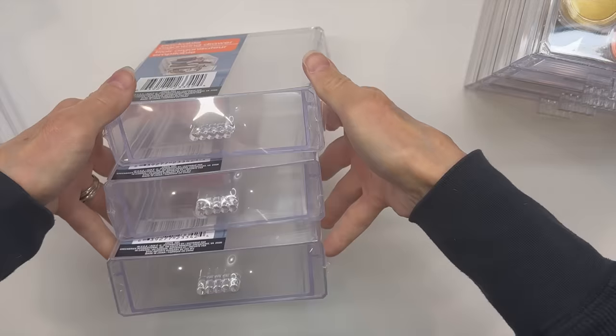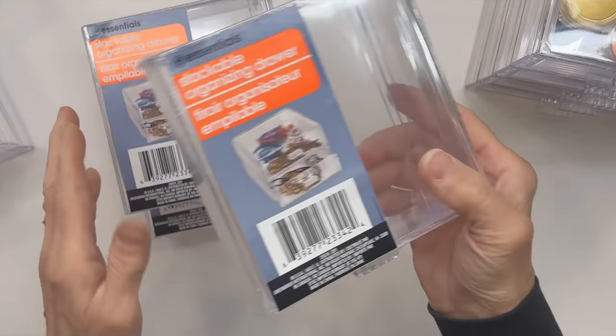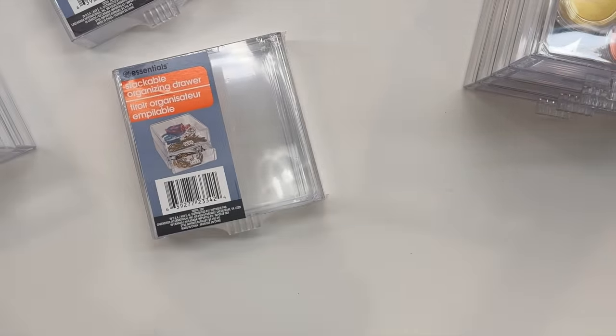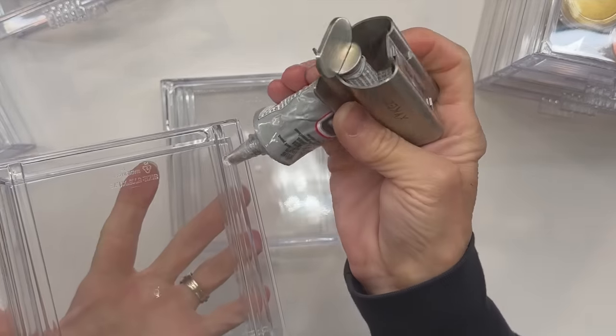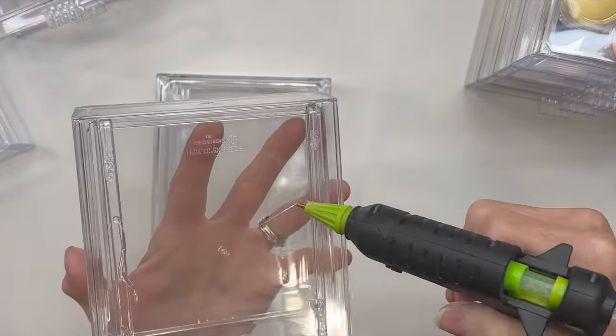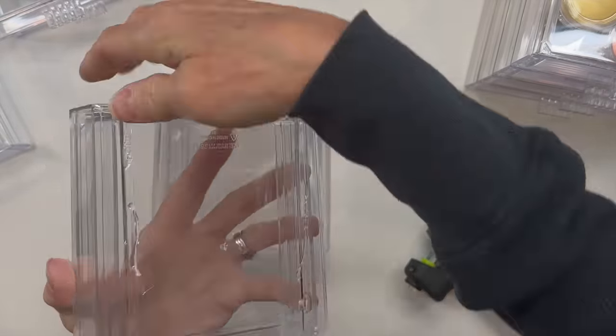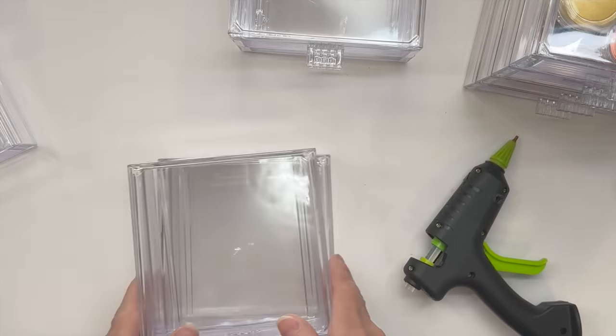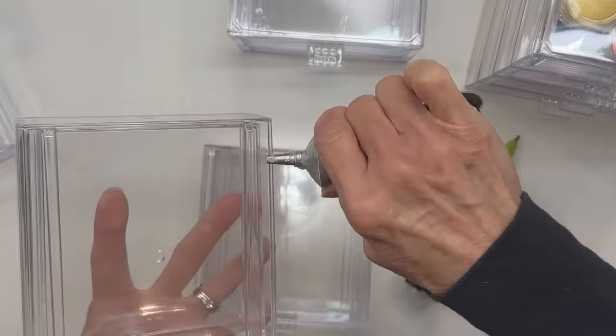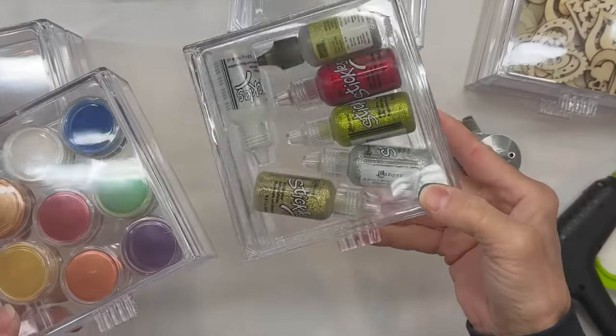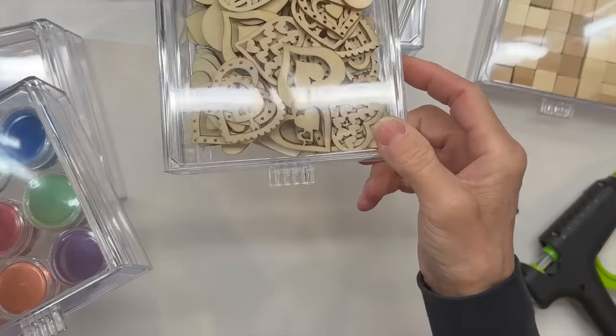Then I got these little stackable drawer units from Dollar Tree. I'm just going to glue two of these together to go all the way across my shelf. I'm gluing these together with a little E6000 glue and some hot glue to make sure they stay together. If you can't find these at Dollar Tree you can order them online. I ended up ordering a case of them because they are a handy little drawer unit. I'm just putting things in it that don't take up a lot of space that ended up getting lost in all the rest of my craft stuff.